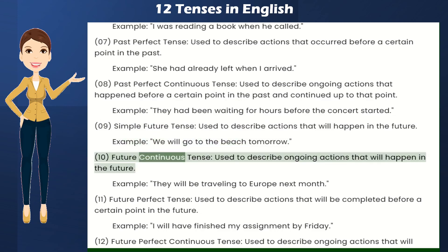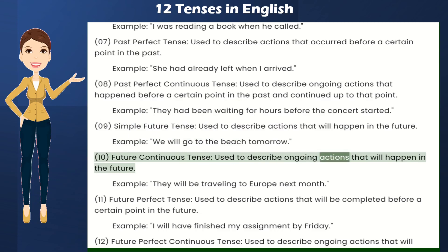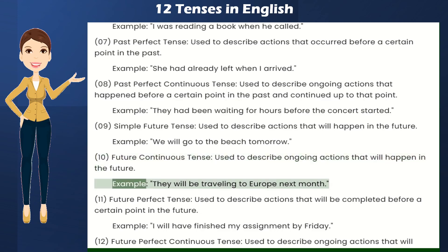Future Continuous Tense — used to describe ongoing actions that will happen in the future. Example: They will be traveling to Europe next month.